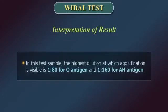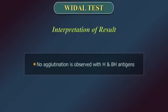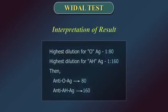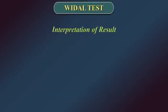In this test sample, the highest dilution at which agglutination is visible is 1 is to 80 for O antigen and 1 is to 160 for AH antigen. No agglutination is observed with H and BH antigens. Hence, the patient suffers from Salmonella typhi infection with anti-O antibody titer of 80 and anti-AH antibody titer of 160.